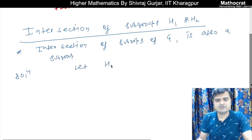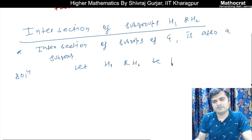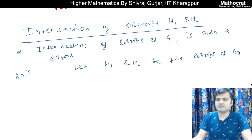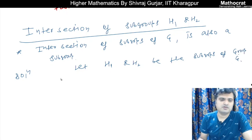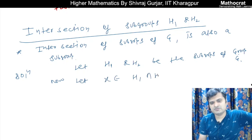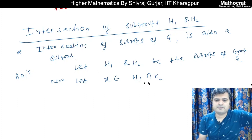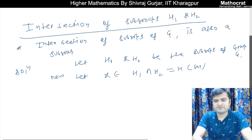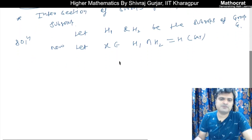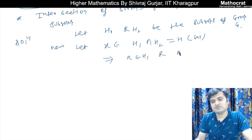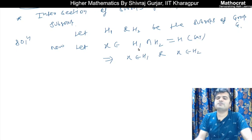Let H1 and H2 be the subgroups of group G. Now let x belong to H1 intersection H2. We have to show that H1 intersection H2 is also a subgroup. If x belongs to H1 intersection H2, that implies x belongs to H1, and x also belongs to H2. Then only it will be part of the intersection of H1 and H2.